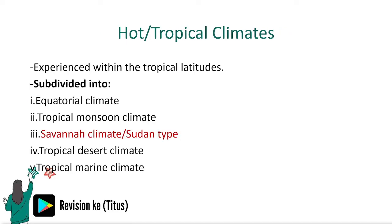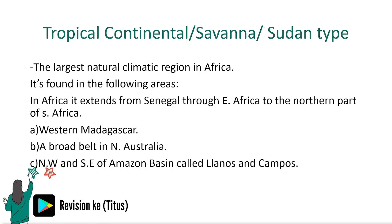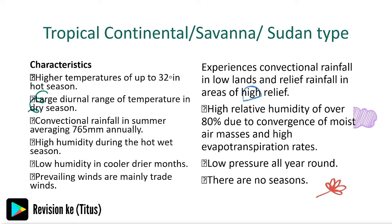The savannah climate or Sudan type is the largest natural climatic region in Africa. It is found in Africa extending through East Africa to the northern part of South Africa, and in a broad belt in northern Australia outside Africa.